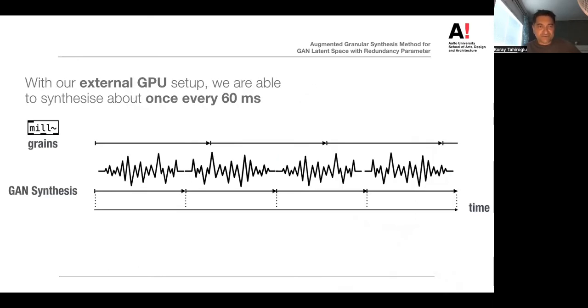With our particular external GPU setup, we are able to synthesize about once every 60 milliseconds. At the same time, the grains played by Mill external range in length from zero to 600 milliseconds depending on the sensor input from the Alterity. This means that the contents of Mill's audio buffer are often updated in the middle of playback, as you can see in this figure, which causes discontinuities in the waveform and the clicking artifacts.